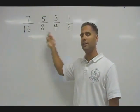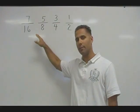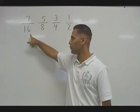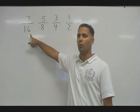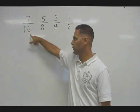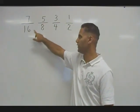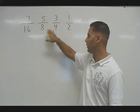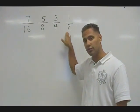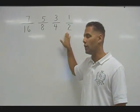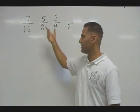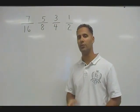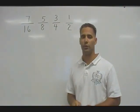It can be difficult to compare fractions with different denominators because a denominator really is a unit of measurement. We would say that this unit is in sixteenths, these units are in eighths, these units are in fourths, and these units are in halves. So essentially, these are different size pieces, and you really shouldn't compare different size units to each other.